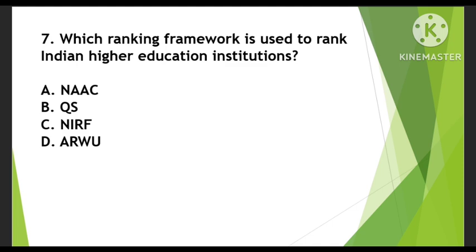Next question: Which ranking framework is used to rank Indian higher education institutions? Many students get confused between NAAC and NIRF. Options are NAAC, QS, NIRF, or NDAW. NAAC gives grades like A++, A+, B+, B, while the ranking is done by NIRF — N-I-R-F. So the right answer is C, NIRF.